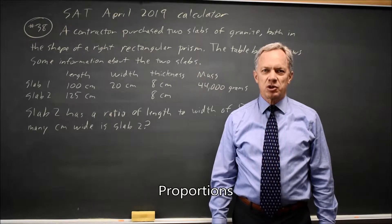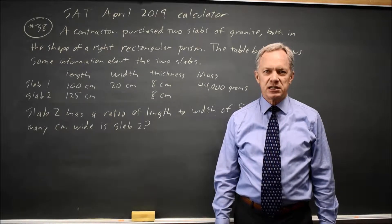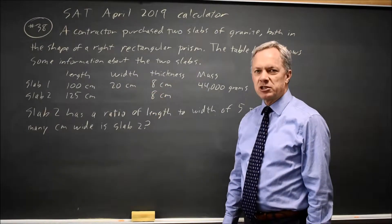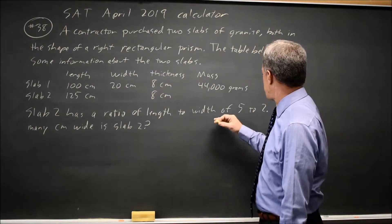This is calculator question number 38 from the March 2019 SAT. College Board describes two slabs of granite and they say slab 2 has a ratio of length to width of 5 to 2.